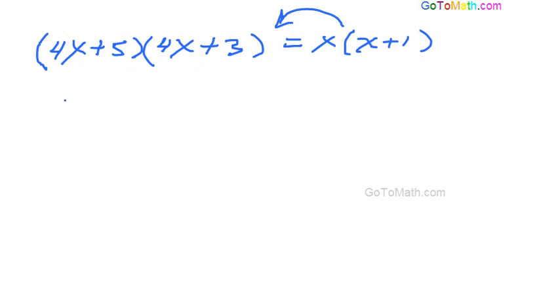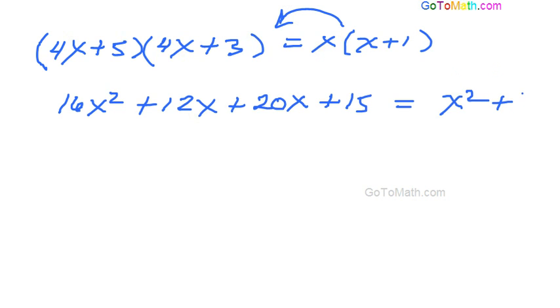So we have 4x times 4x is 16x squared, and then 4x times 3 is 12x, and 5 times 4x is 20x, and then 5 times 3 is 15. All right. I'll go ahead and distribute that across. So we have x squared plus x.